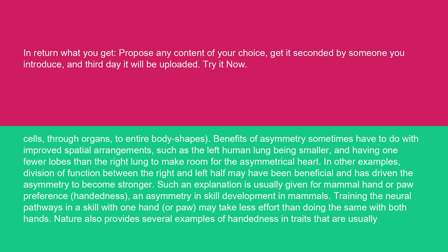Such an explanation is usually given for mammal hand or paw preference, handedness, an asymmetry in skill development in mammals. Training the neural pathways in a skill with one hand or paw may take less effort than doing the same with both hands. Nature also provides several examples of handedness in traits that are usually symmetric.